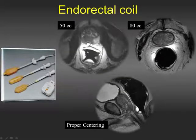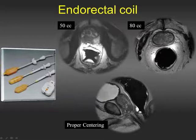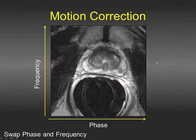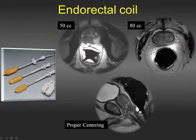An important point about the endorectal coil is that we use air to distend it. Some institutions use perfluorocarbon, which is excellent but expensive, which is why we have not adopted it. It is very important to follow the instructions regarding the volume required for adequate balloon distension — typically 80 cc of air. An inadequately distended balloon, for instance when a patient is uncomfortable and you cannot fully distend it, is essentially as poor as not having the endorectal coil at all, because you lose the delineation of the prostate margins.